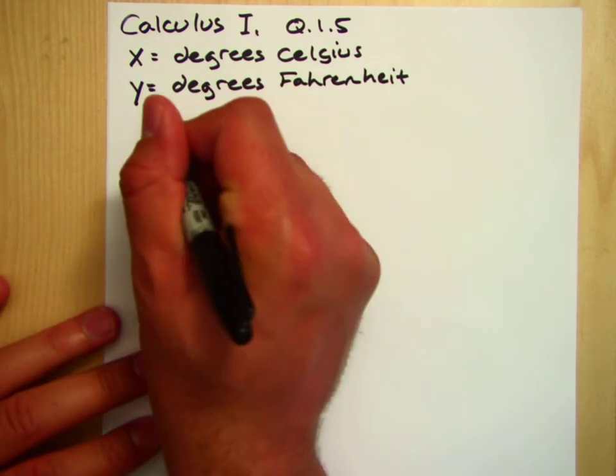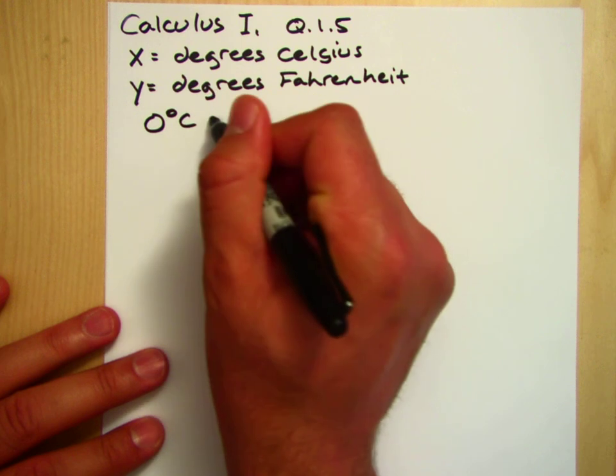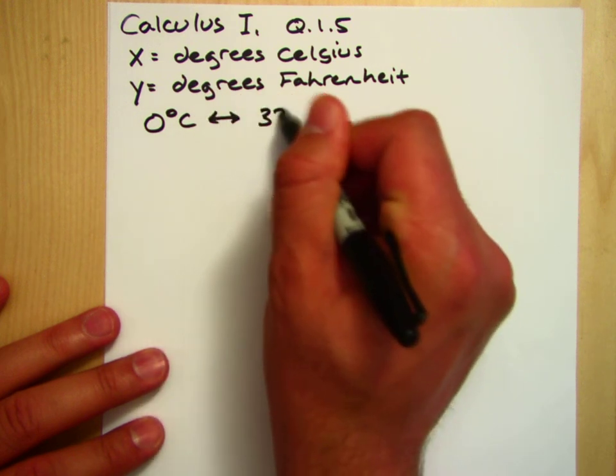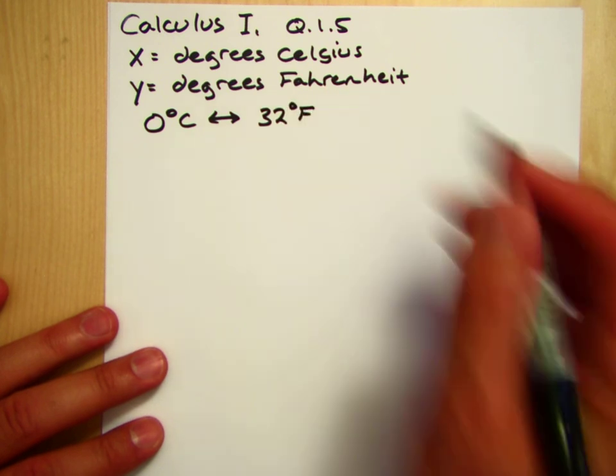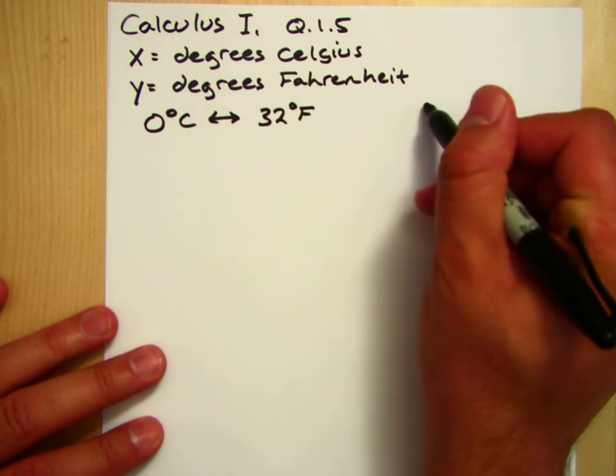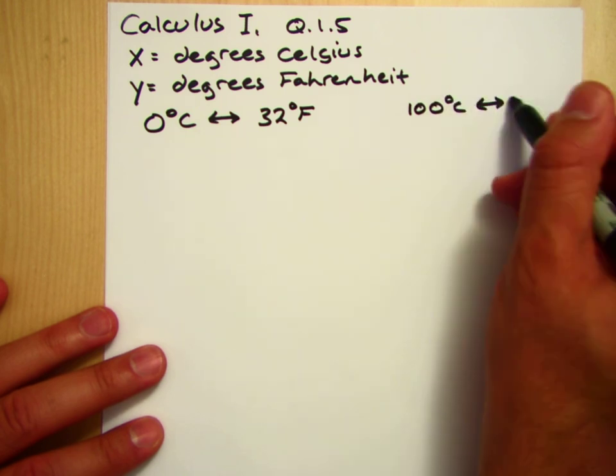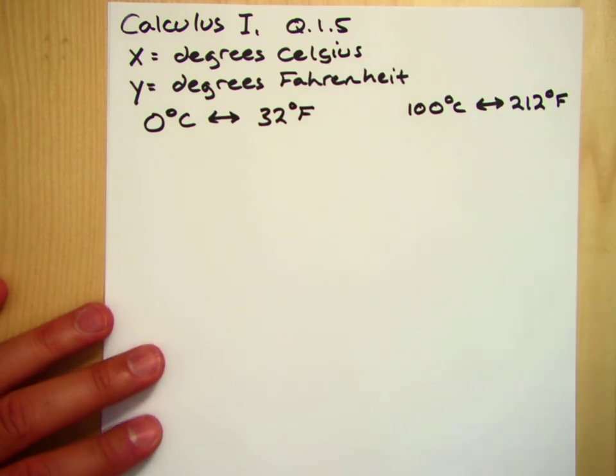We know that zero degrees Celsius corresponds to 32 degrees Fahrenheit, and we know that 100 degrees Celsius corresponds to 212 degrees Fahrenheit.